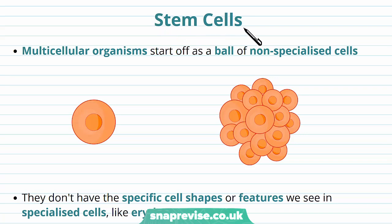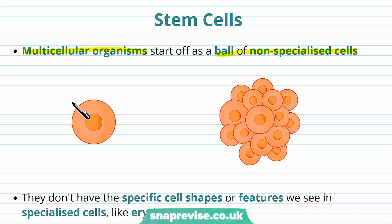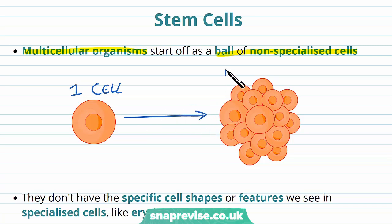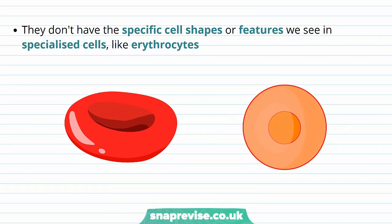As we've emphasized in other videos, some cells need to be specialized to carry out their specific function. However, multicellular organisms don't begin as a multicellular organism. They actually start off as one single cell which becomes a ball of non-specialized cells. So after fertilization we have a single cell which contains our complete set of genetic information, and then this divides and multiplies to form a ball of cells. All of the cells are what we call non-specialized — they don't have any specific features or shapes which we see in specialized cells like erythrocytes.